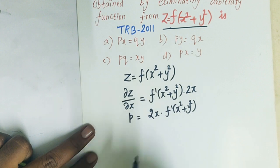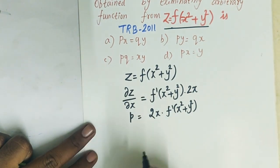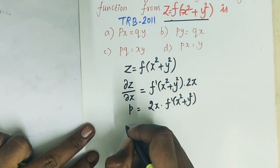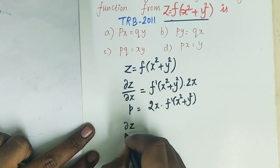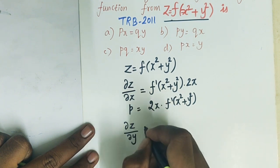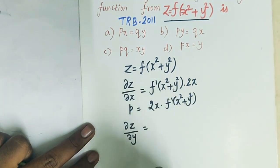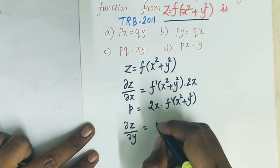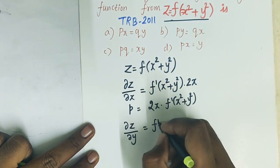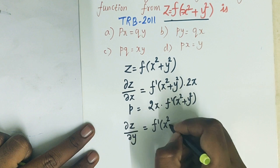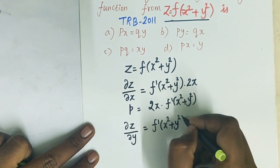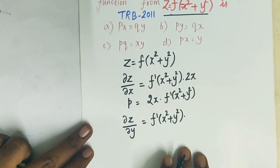Similarly, z equal to f of x square plus y square. We do partial differentiation: dz by dy with respect to y. z equal to dz by dy with respect to y. f of x square plus y square gives 2y.